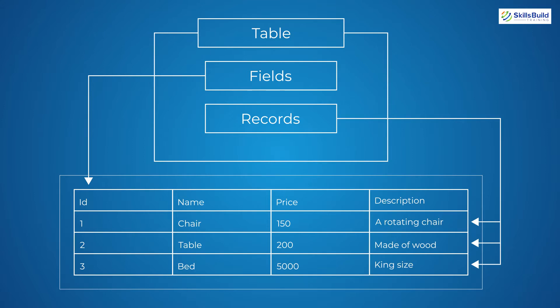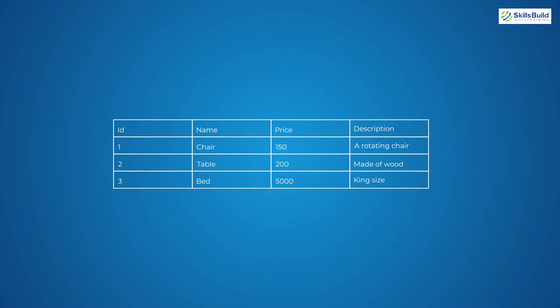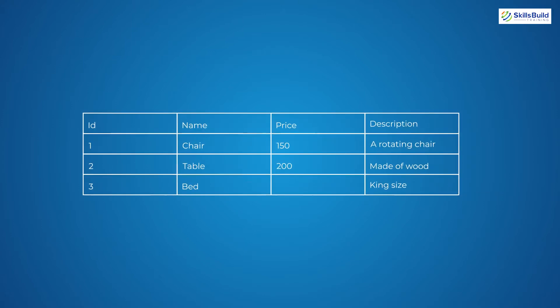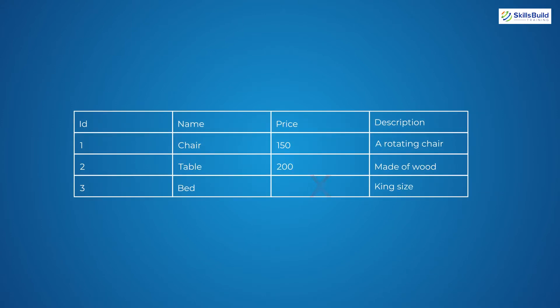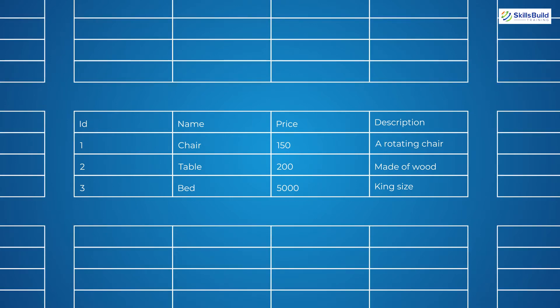In a relational database we have to follow the schema. You cannot do anything outside the schema. For example, if we want to add a new record in the table we have to follow the schema — we cannot add any extra field that we might need later. We can only add data in fields which are already declared, and we cannot leave fields empty or null. This is like a rule, and you may say it is a limitation of relational databases.